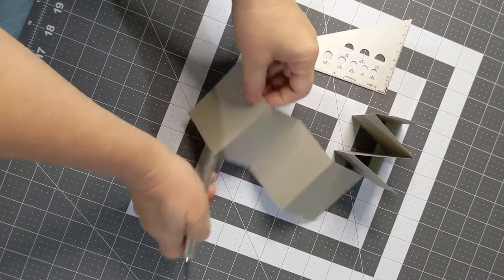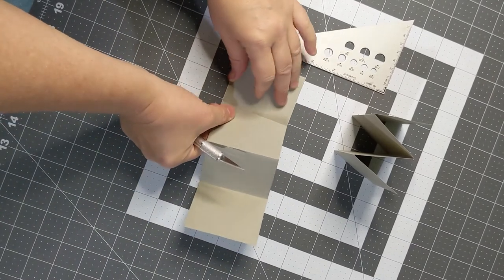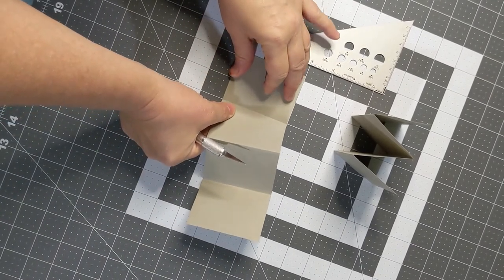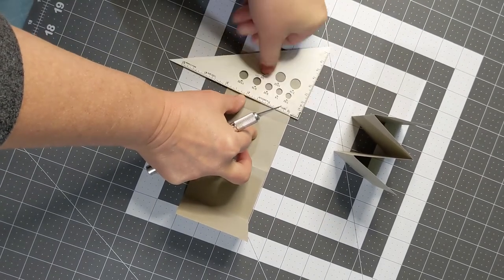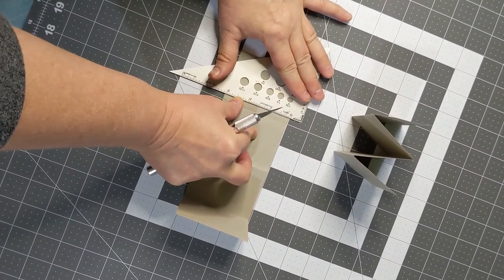If you want to make your accordion longer, make another accordion like the first. Trim the end piece to a quarter of an inch.